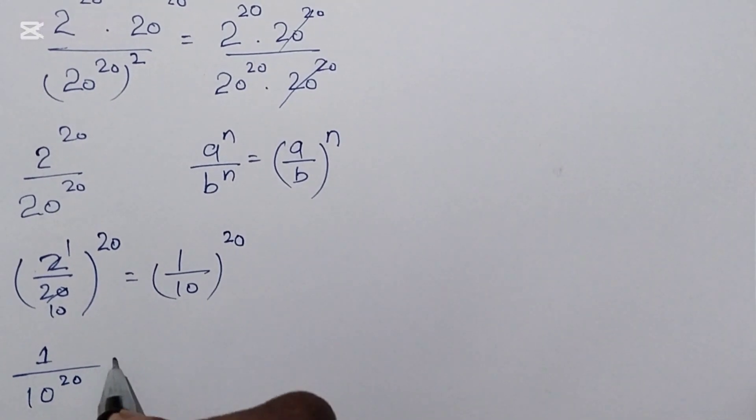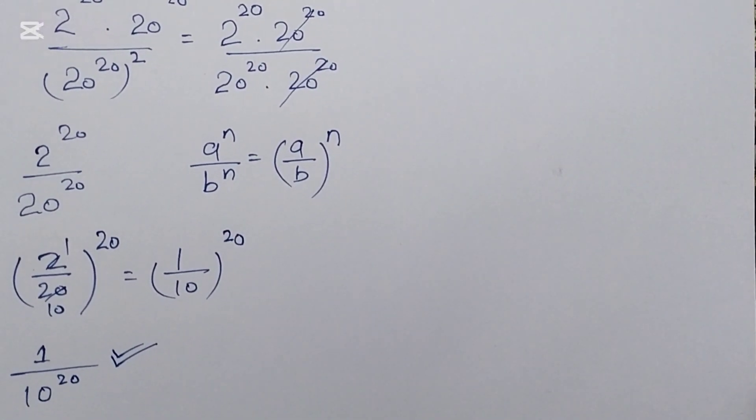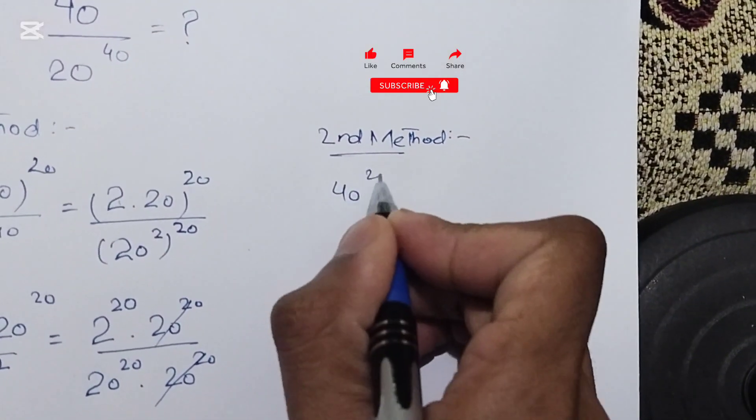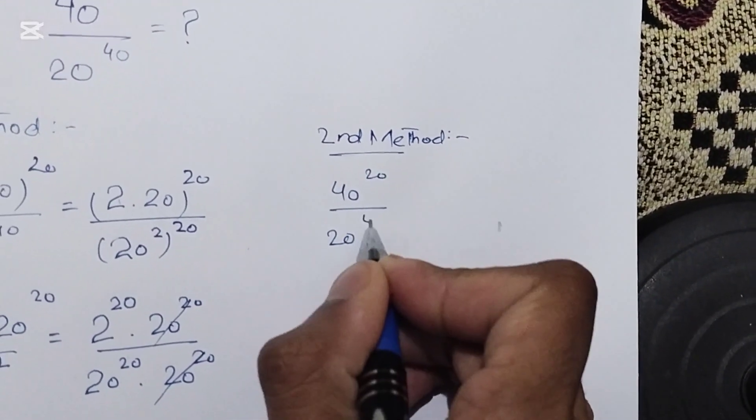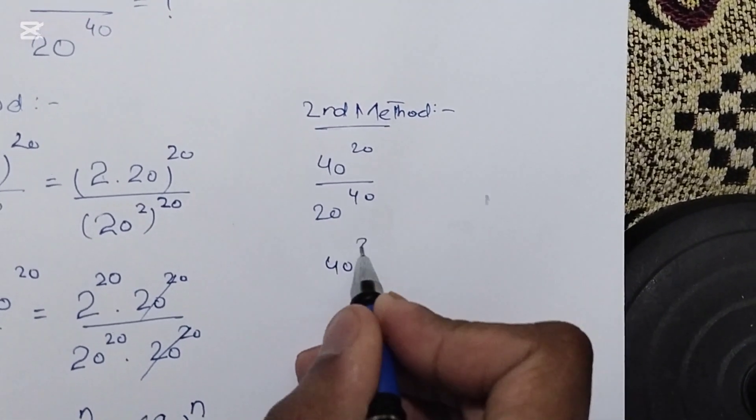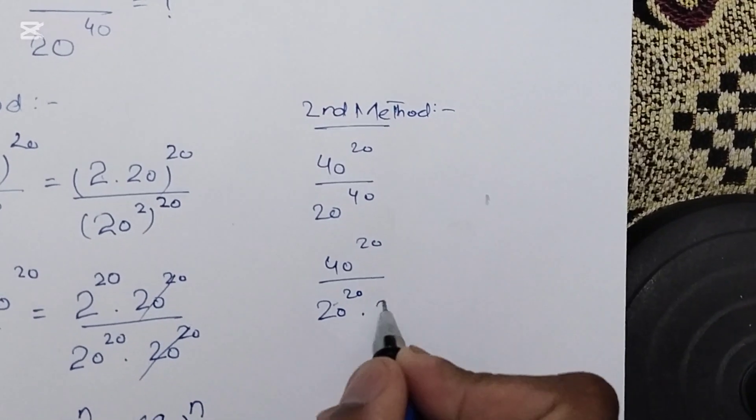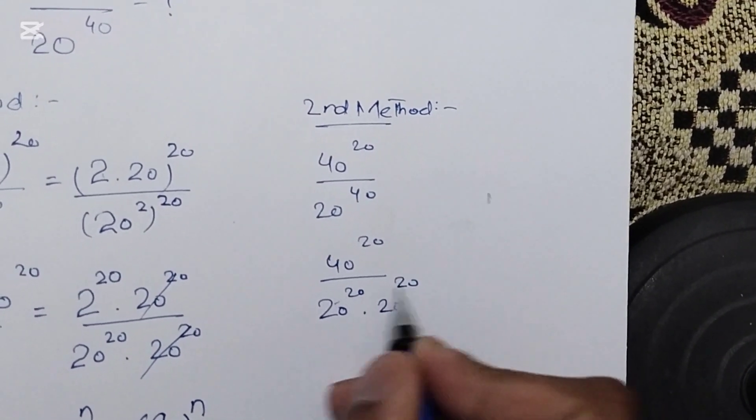This is the final answer to this question using the first method. The second method: 40^20 over 20^40. You can write the denominator 20^40 as 20^20 times 20^20 because the powers add up with the same base.